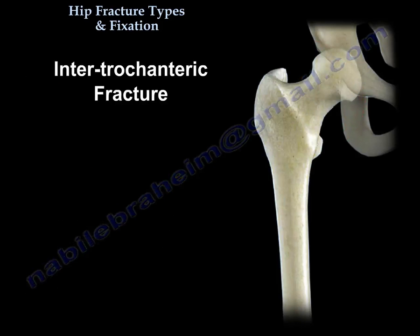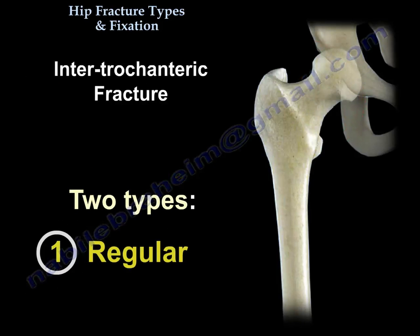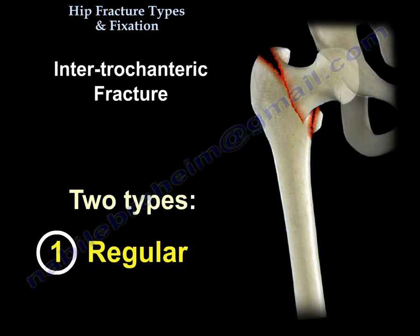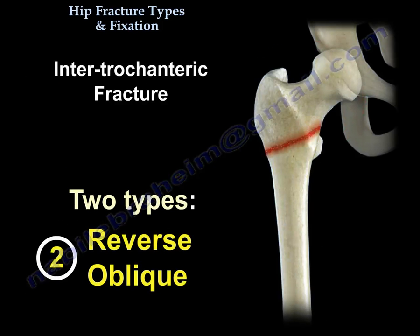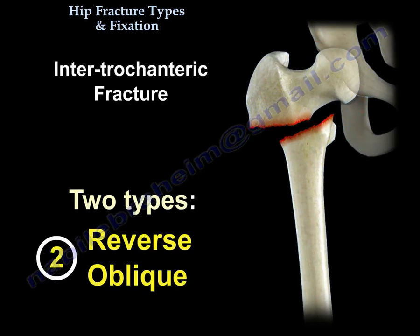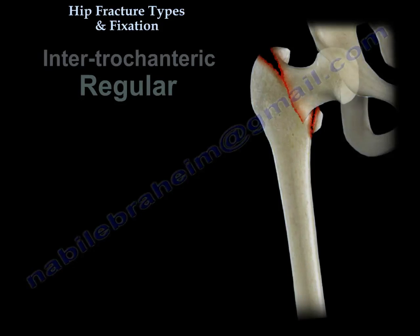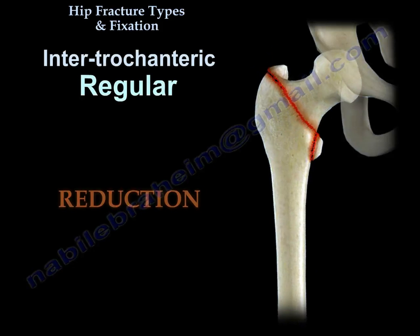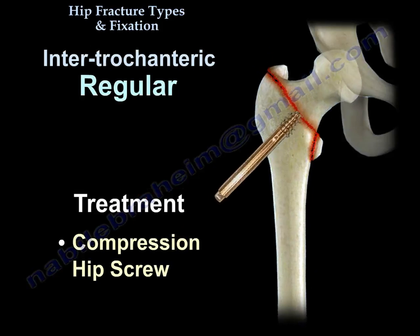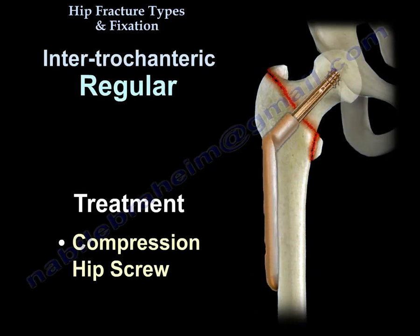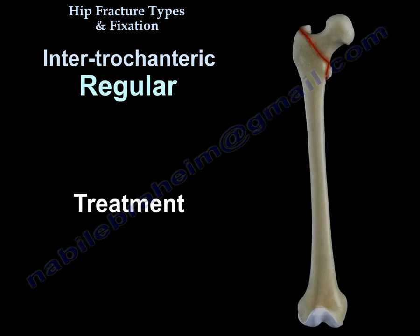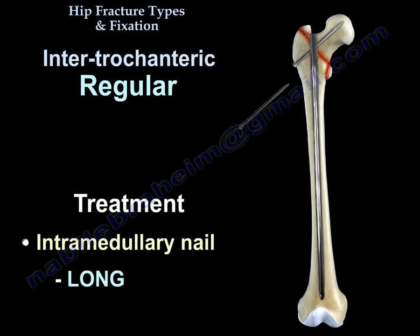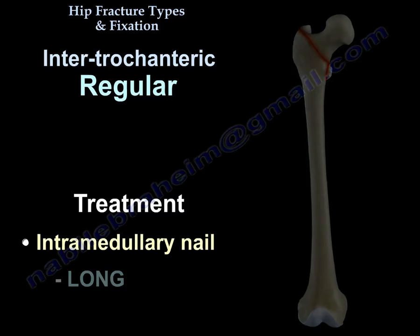Now we move to the intertrochanteric fracture. There are two types: the regular intertrochanteric fracture and the reverse oblique fracture. The regular intertrochanteric fracture can be treated by a compression hip screw or intramedullary nailing — some prefer a long nail, but usually it is treated with a short nail.